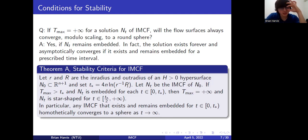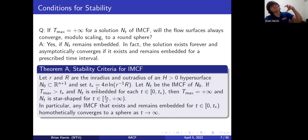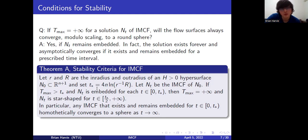So this theorem tells you how long it takes for a non-star-shaped solution to inverse mean curvature flow to become star-shaped. As a corollary, if you have existence and embeddedness for some minimal time, then you have existence and embeddedness for all times and convergence back to a round sphere at large times.